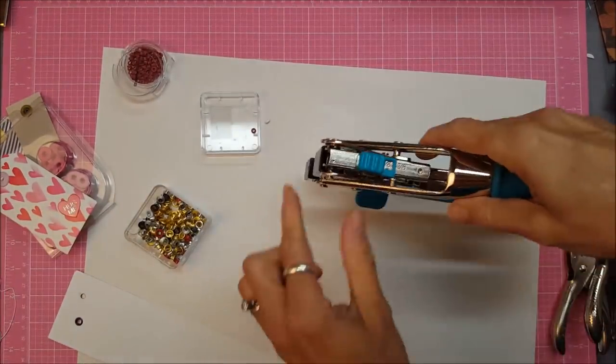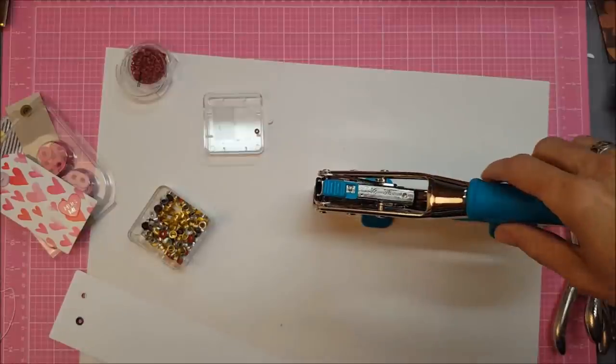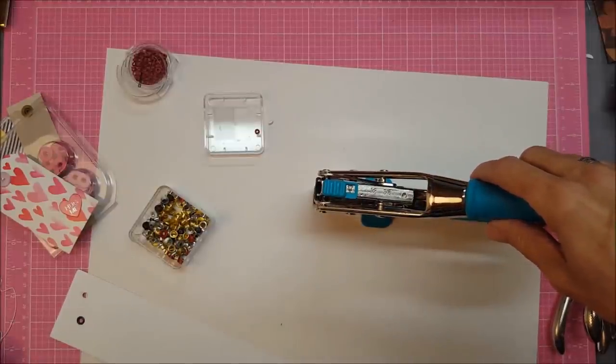Now for this one, first we need to slide this to eyelet setting. For this one, this setting, we're going to need C3.